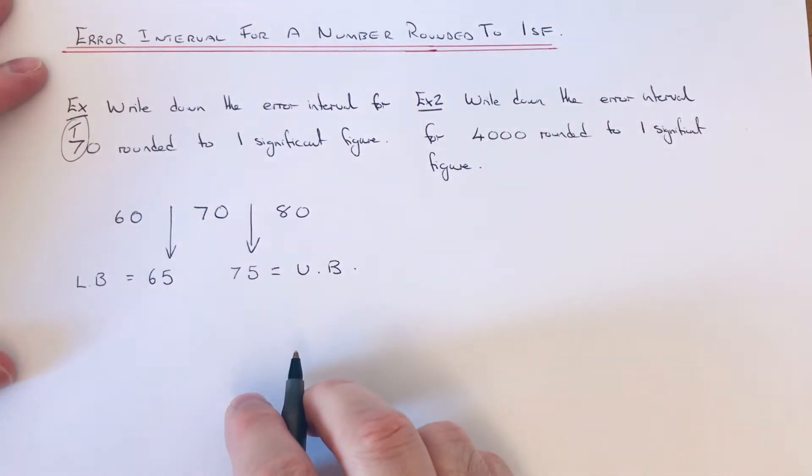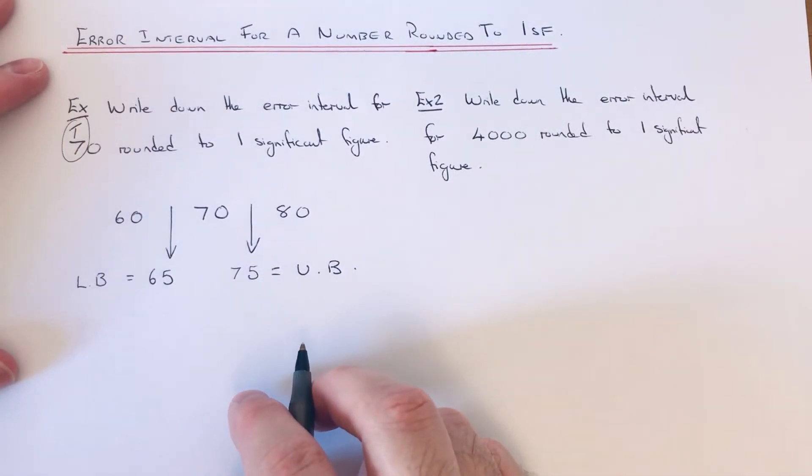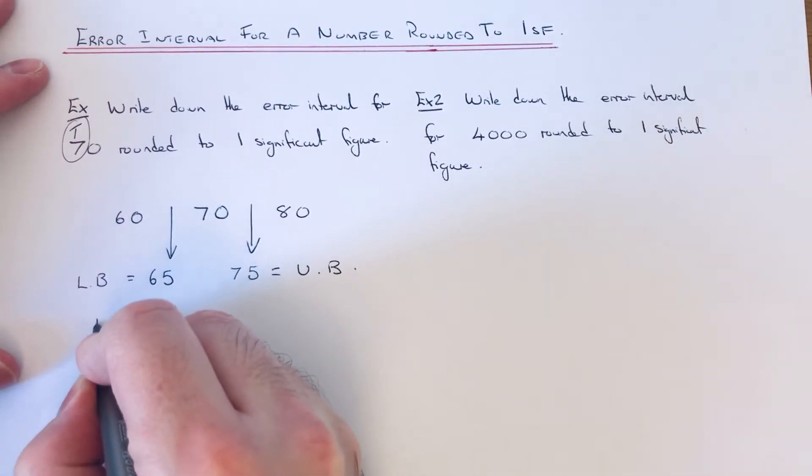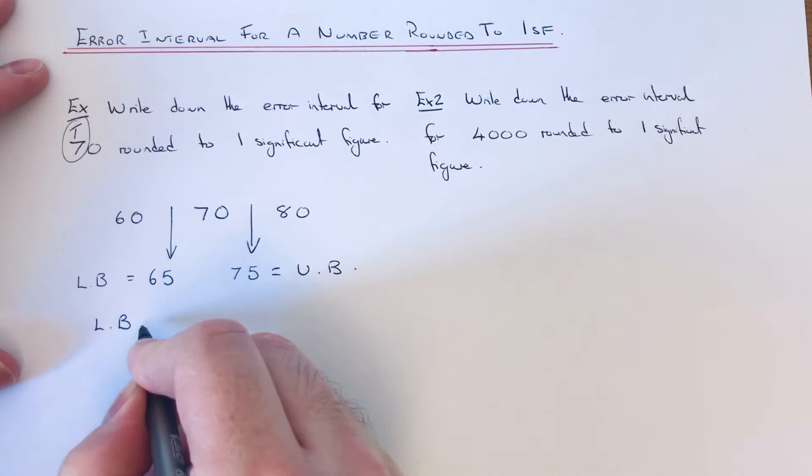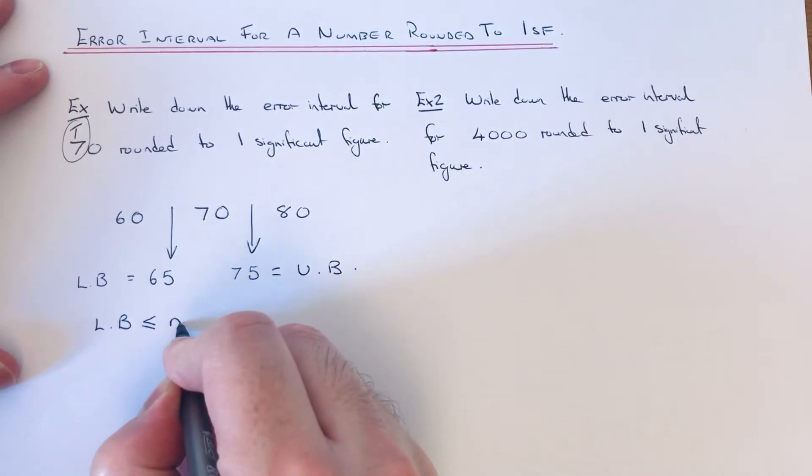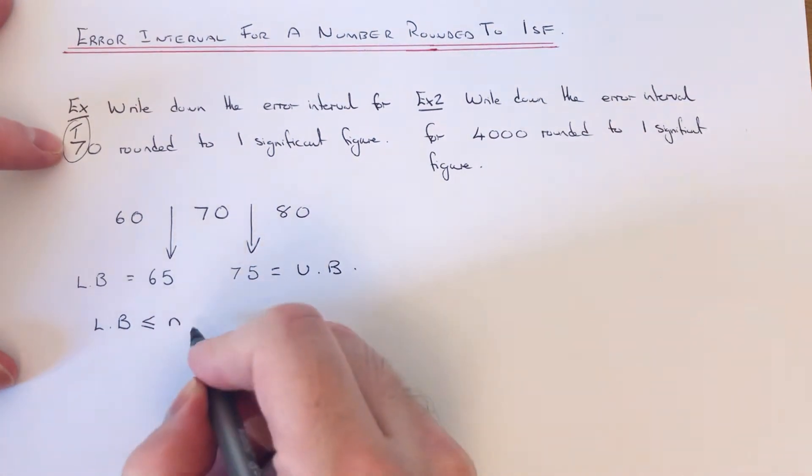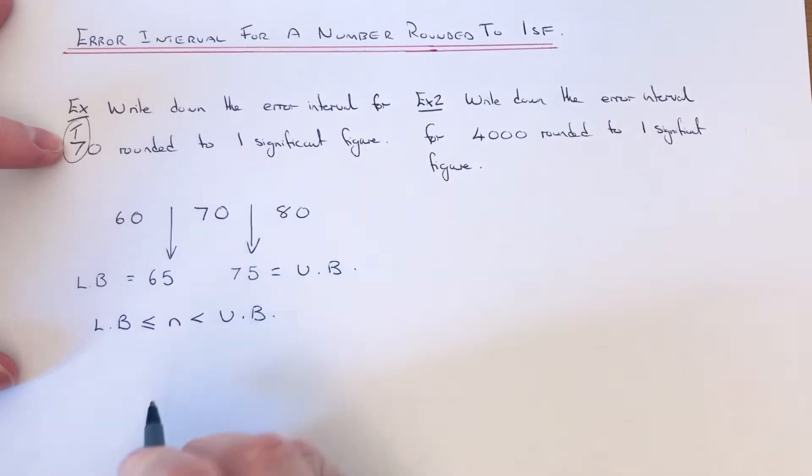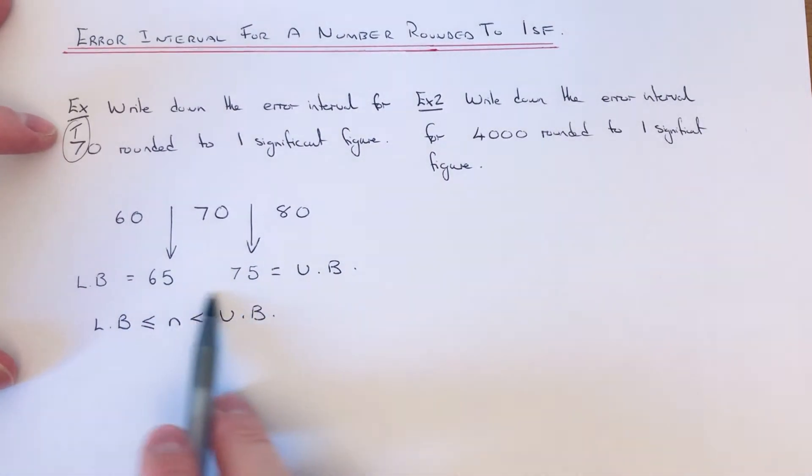Okay, so we just need to use these two now to write down our error interval. To do our error interval, you need to put the lower bound first, then a less than or equal to sign, then the letter N because it's just our number that we rounded off. Then we put a less than sign and then we put the upper bound at the end. So an error interval always takes this form here.